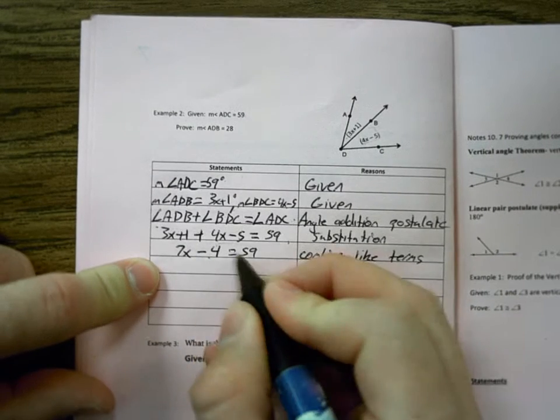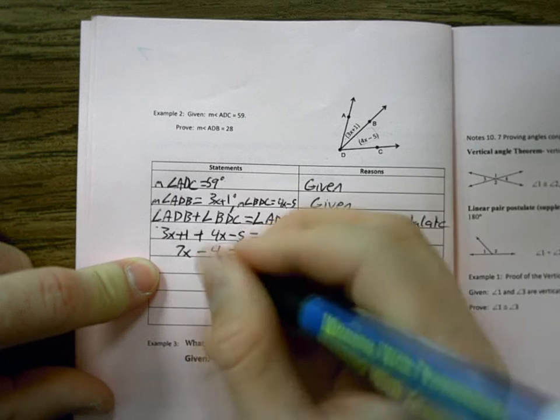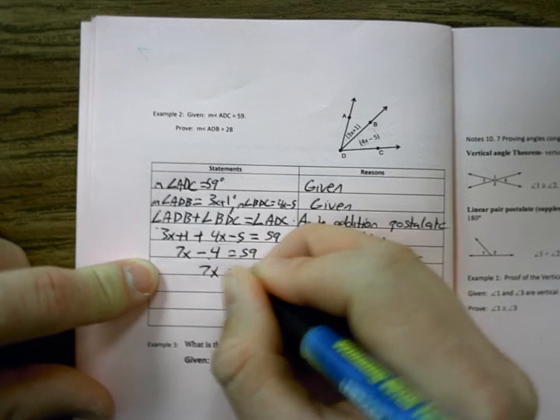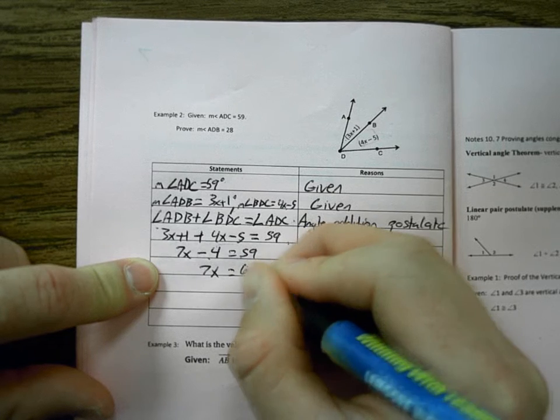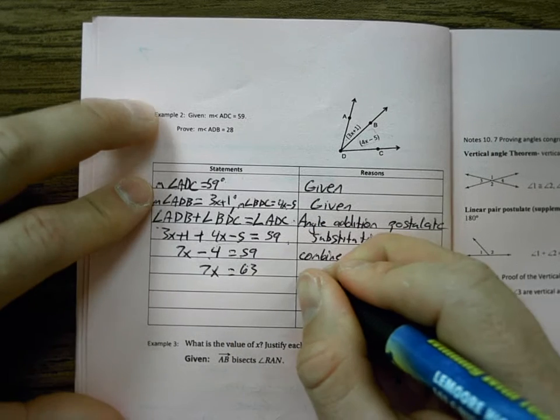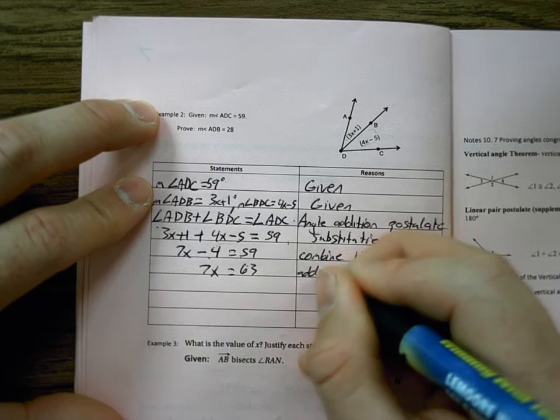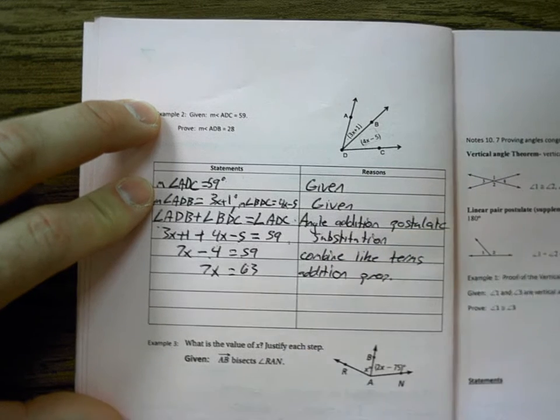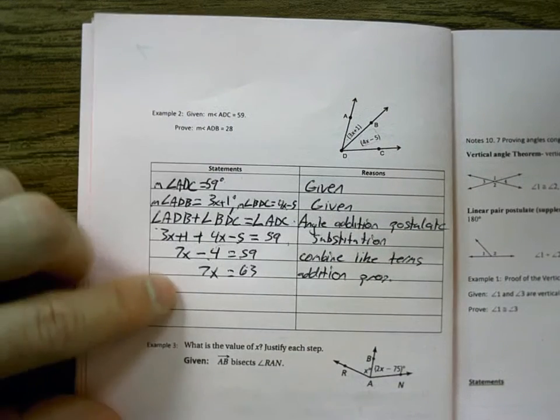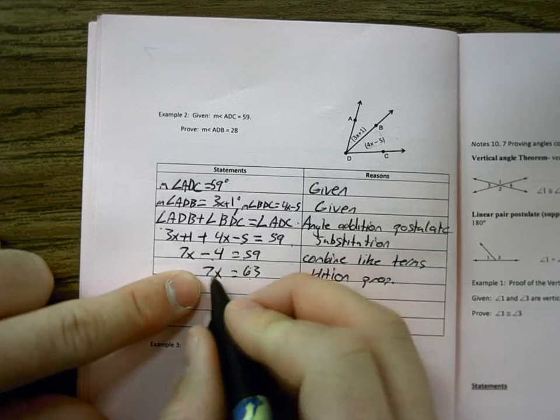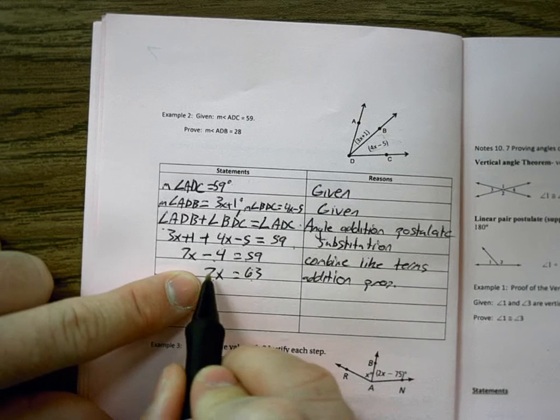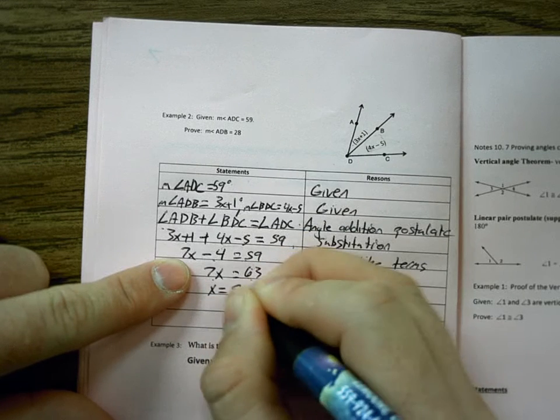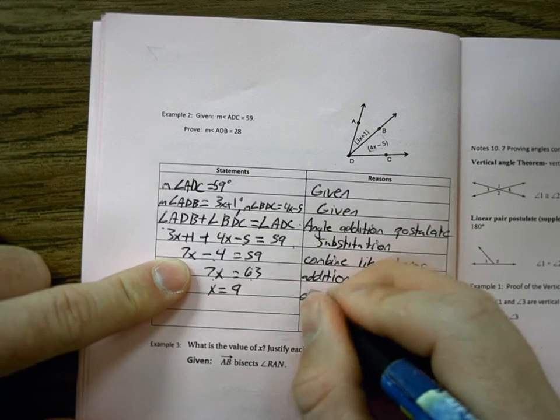I want to add 4 to the other side because it is the inverse of subtracting 4. That is why. That's 63, so that is addition property. Divide by 7 on both sides because that is the inverse of 7 times X. Division property.